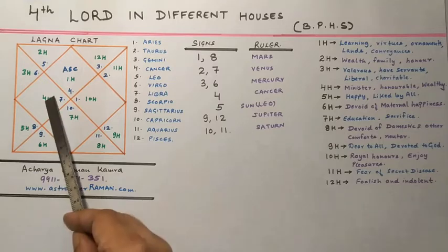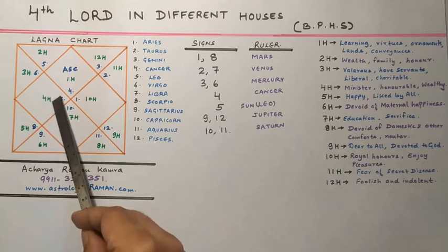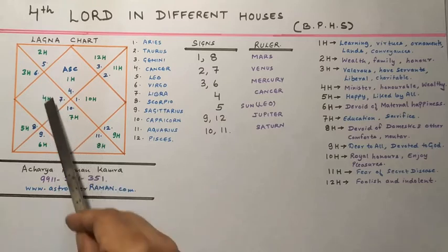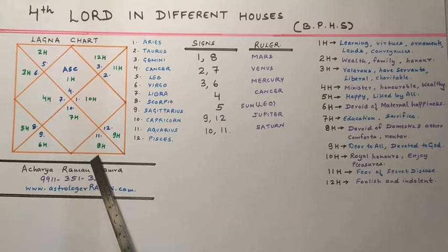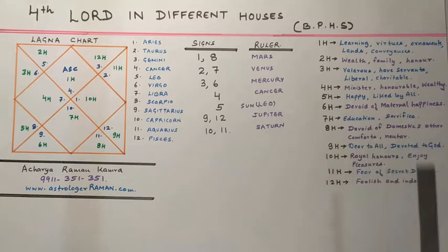If the 4th lord is placed in the 8th house, the native will be devoid of domestic and other comforts. He will not enjoy much parental happiness and will be equal to a neutral.